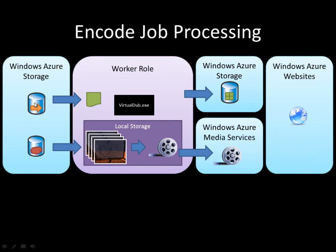For the encode jobs, the message will be dequeued by the worker role. We'll basically download all of the actual frames that make up the animation — all of the JPEG files. We use VirtualDub, which can read in all of the JPEG files and will create an AVI file. The AVI file is then uploaded into Windows Azure Media Services and it's then encoded into an MPEG-4 format. We also update the database so that the animation has been completed and the animation will be visible on the website.